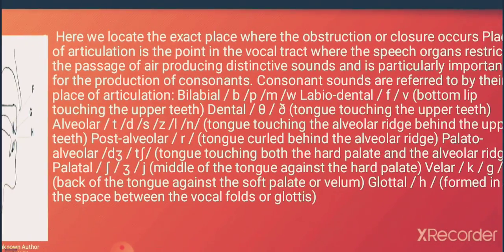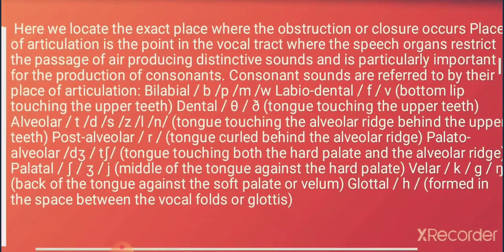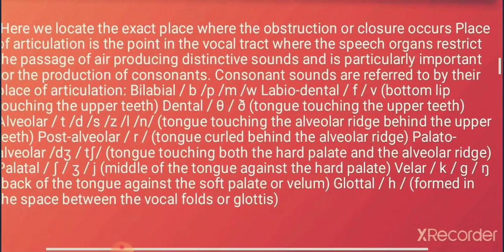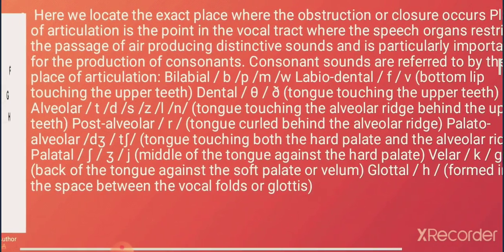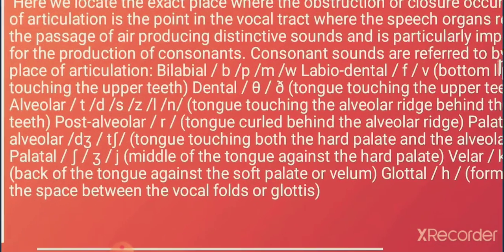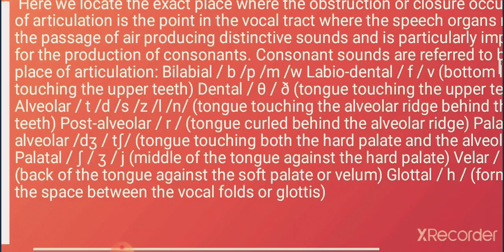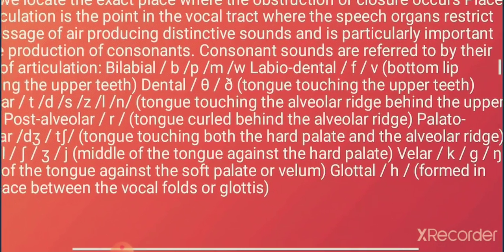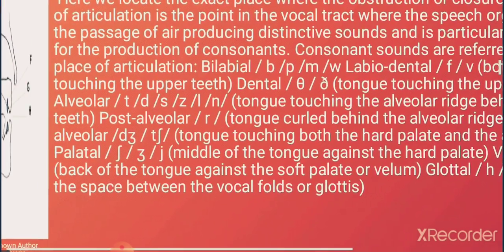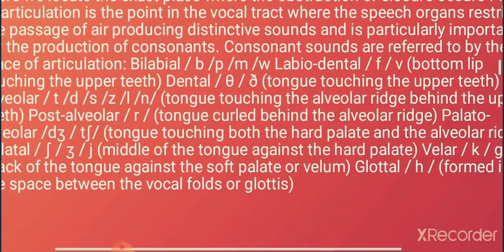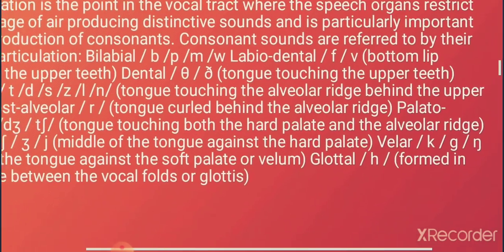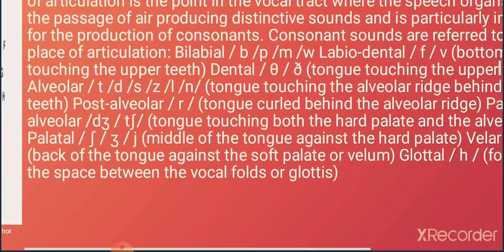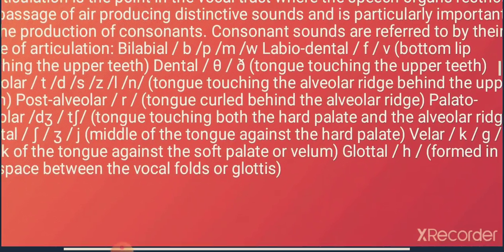Place of articulation is particularly important for the production of consonant sounds. For example, bilabial sounds include 'b', 'p', and 'm'. Labiodental sounds — such as 'f' and 'v' — are produced when the bottom lip touches the upper teeth. Dental sounds involve the tongue touching the upper teeth.